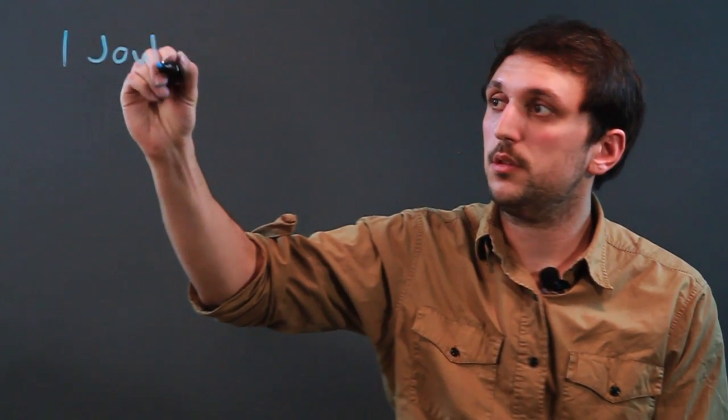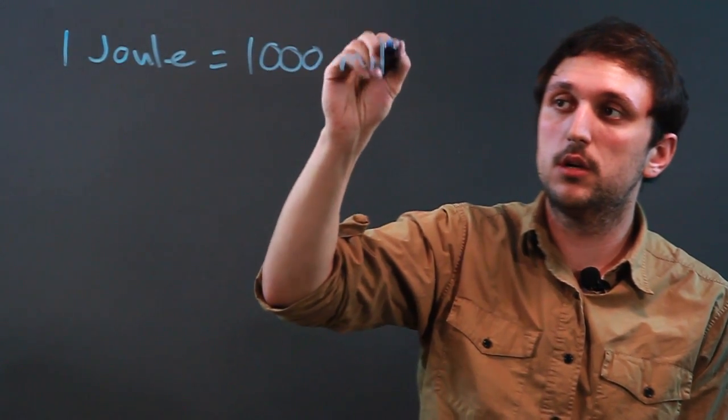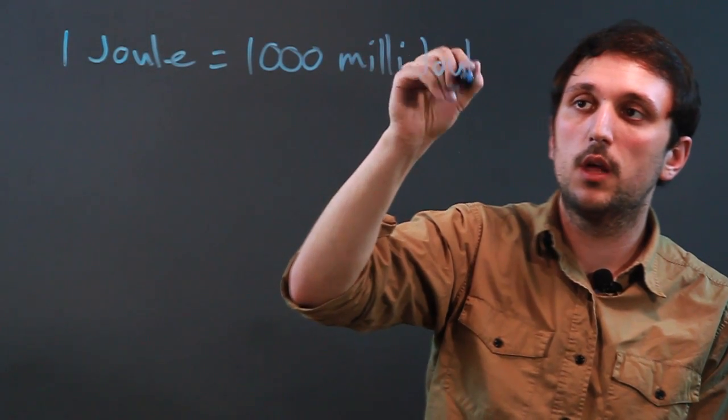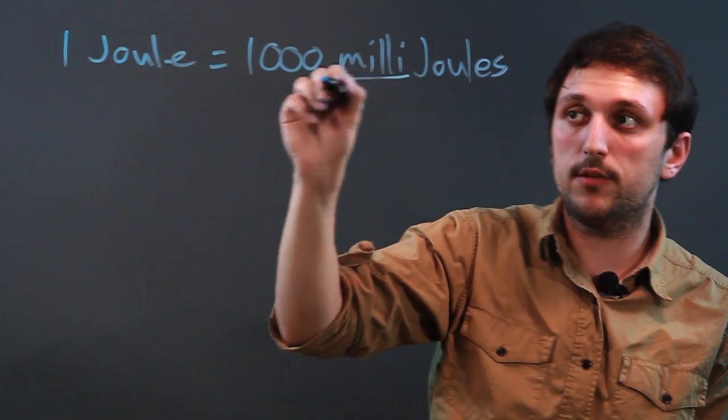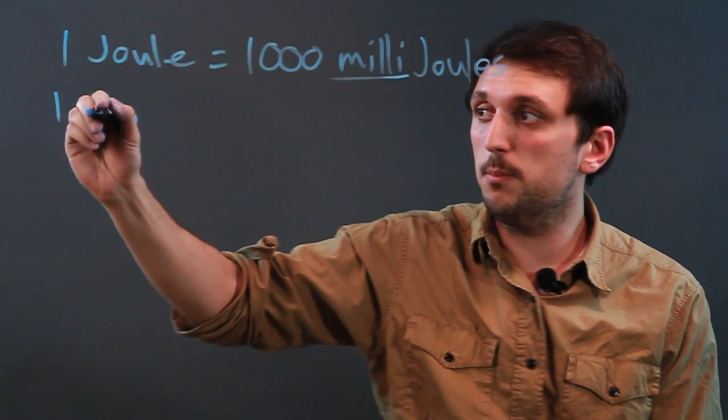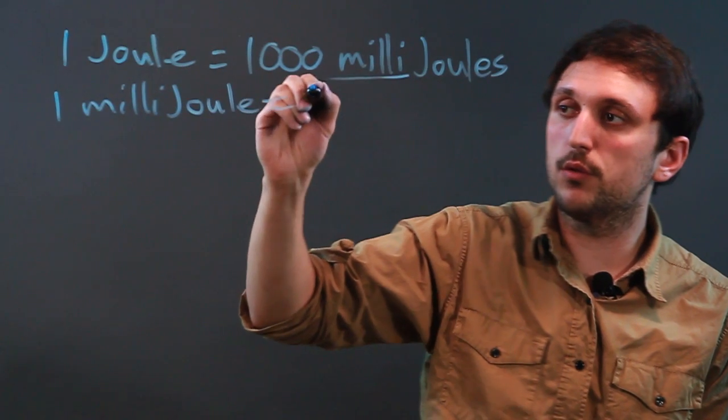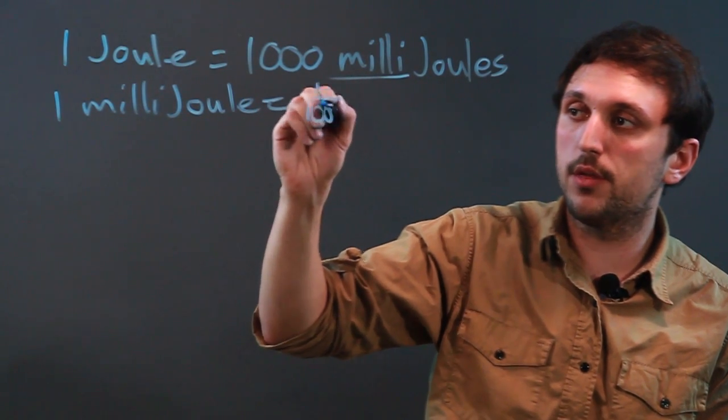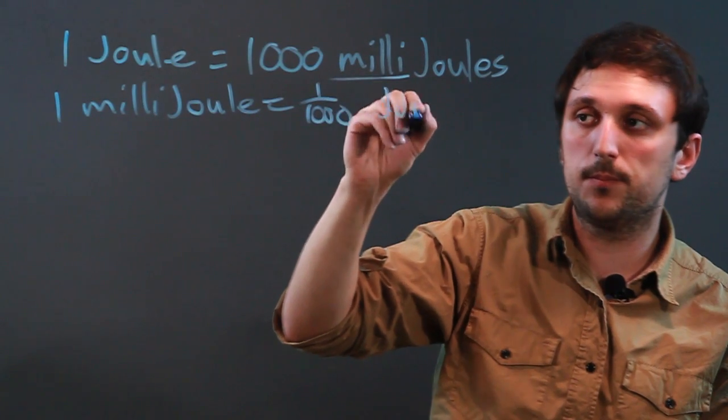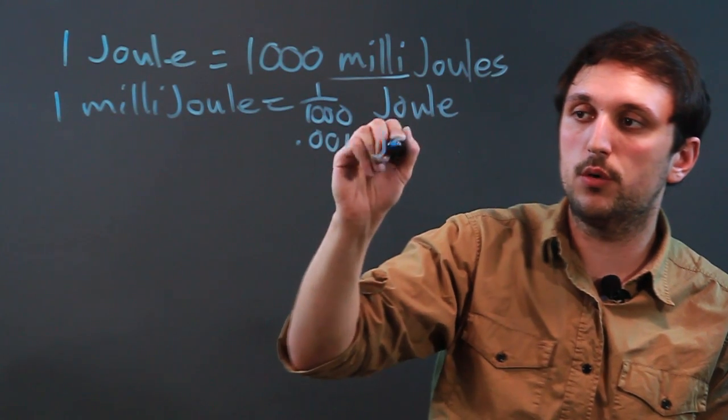Now, what you have to remember is that 1 joule equals 1,000 millijoules. And a way to remember that is milli is 1,000th as a prefix. So 1 millijoule equals 1,000th of a joule or .001 joule.